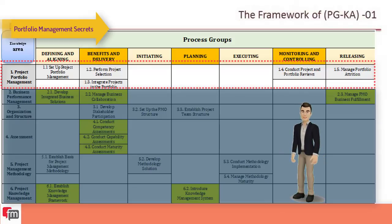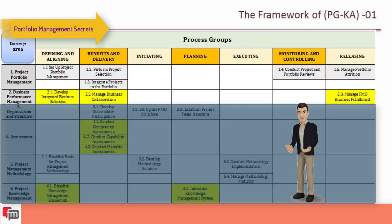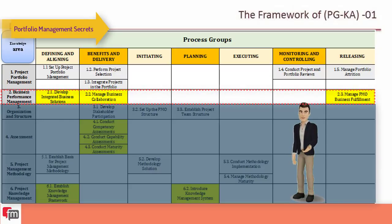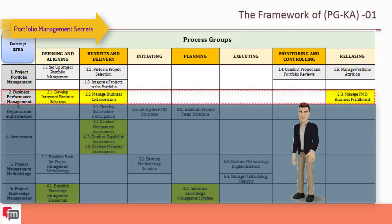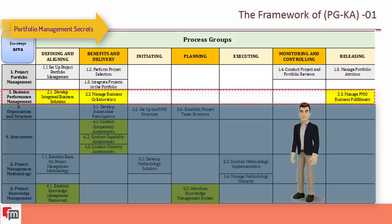The second knowledge area is business performance management. The PMO's role applies professional disciplines and effort to integrate project management practice with business performance objectives. There are three processes: develop integrated business solution, manage business collaboration, and manage PMO business events.